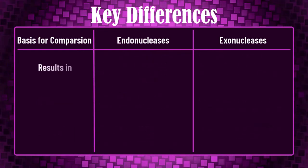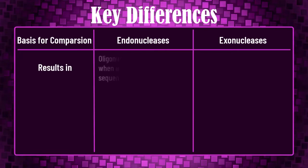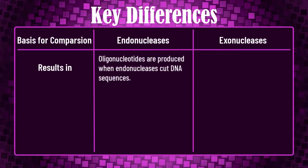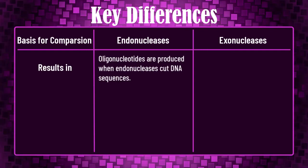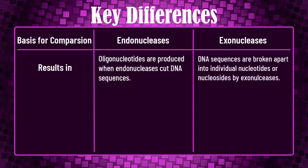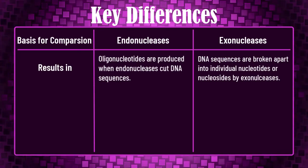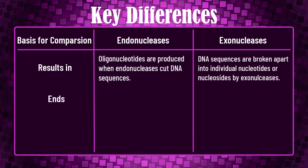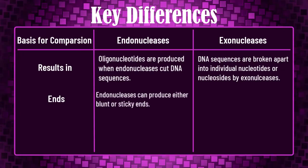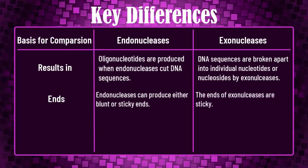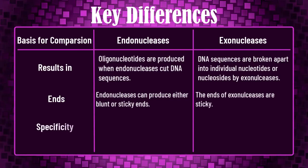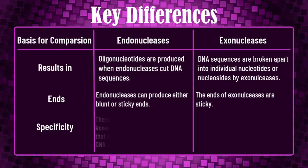Regarding results: endonucleases produce oligonucleotides when they cut DNA sequences, whereas DNA sequences are broken apart into individual nucleotides or nucleosides by exonucleases. Regarding the ends: endonucleases can produce either blunt or sticky ends, whereas the ends produced by exonucleases are sticky.